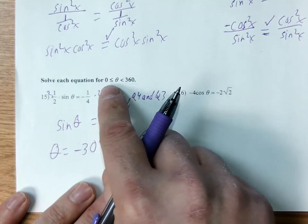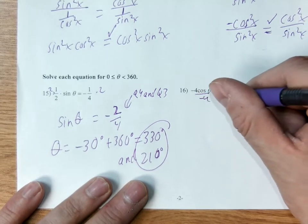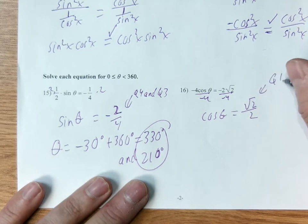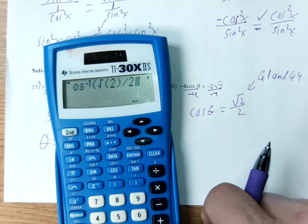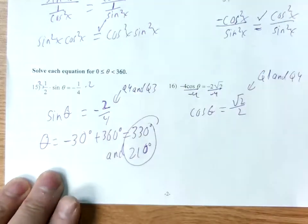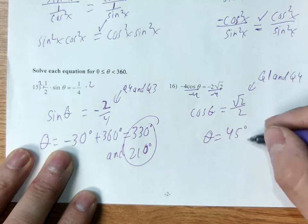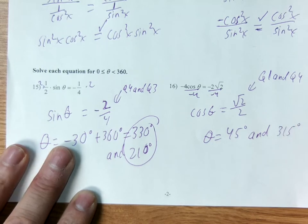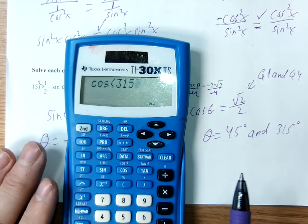For this one, I'll divide by negative 4, which makes the negative on the right now positive. So the cosine of the angle equals root 2 over 2, which is positive. Cosine is positive in quadrant 1 and quadrant 4. The arc cosine of root 2 over 2 gives the quadrant 1 angle: 45 degrees. I don't need to add 360 since it's already between 0 and 360. The quadrant 4 angle is 360 minus 45, which is 315 degrees. Verifying: is the cosine of 45 equal to root 2 over 2, approximately 0.707? Yes. Is the cosine of 315 the same value? Yes.